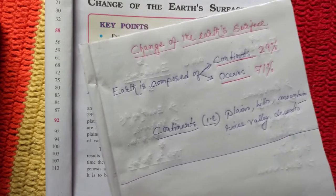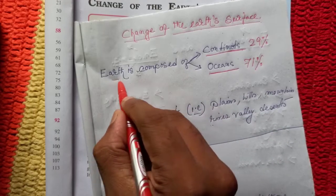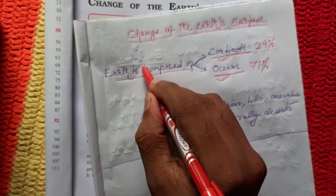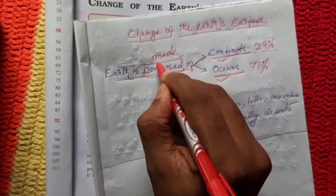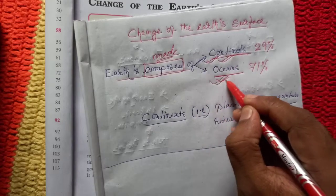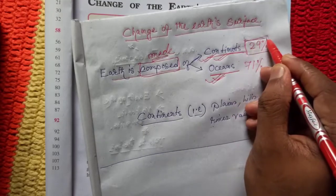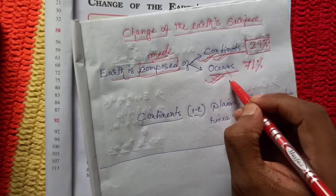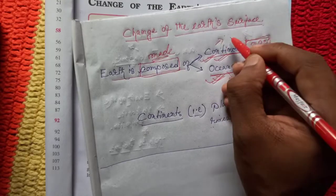Earth is composed of two things: continents and oceans. 'Composed' means 'made of' — earth is made of two things. The continents comprise 29 percent and the oceans are 71 percent. Oceans mean water bodies and continents mean land masses.